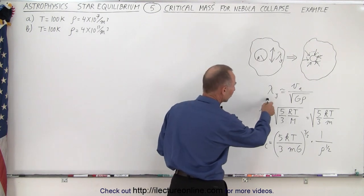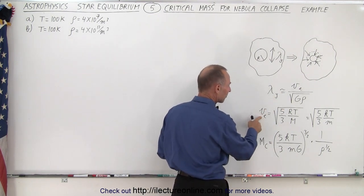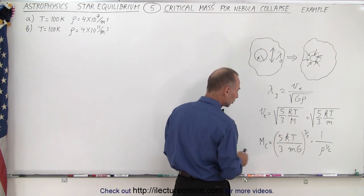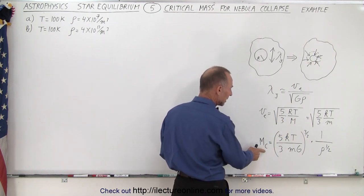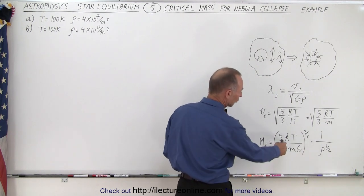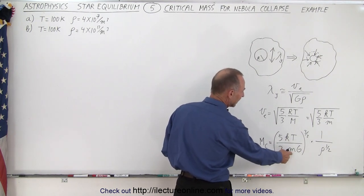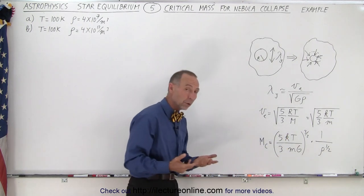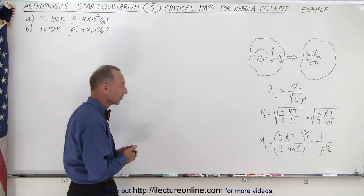Remember we had Jeans length defined like this, we had the escape velocity defined like this for monatomic molecule, and then we calculated the critical mass. Now it's equal to this and let's use Boltzmann's constant and the molecular mass rather than the gas constant and the molar mass. You can see how it's done like this.